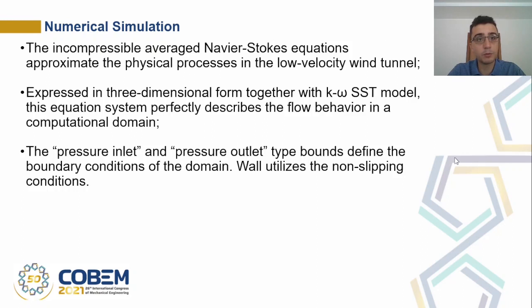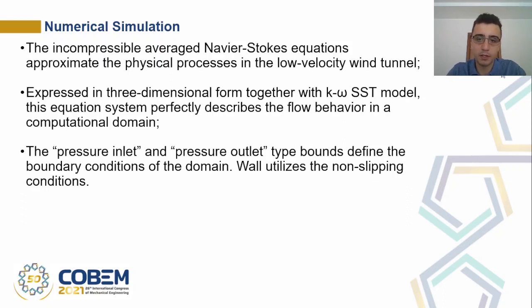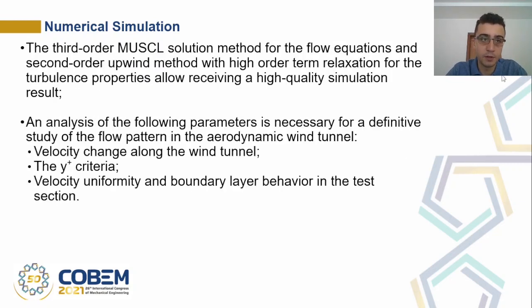The numerical simulation was made using the incompressible averaged Navier-Stokes equations approximating the physical process in the low-velocity wind tunnel expressed in three-dimensional form together with the k-omega SST model. This equation system describes the flow behavior in the computational domain. Pressure inlet and pressure outlet boundary conditions were defined while utilizing the no-slip conditions. A third-order MUSCL solution method for flow equations and second-order upwind method with high-order turbulent relaxation for turbulence properties were used to achieve high quality simulation results.